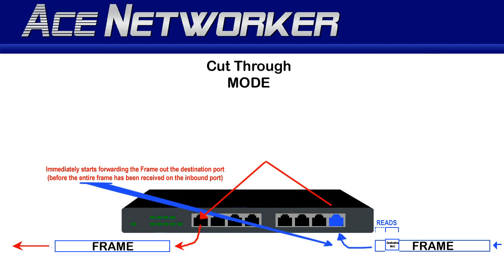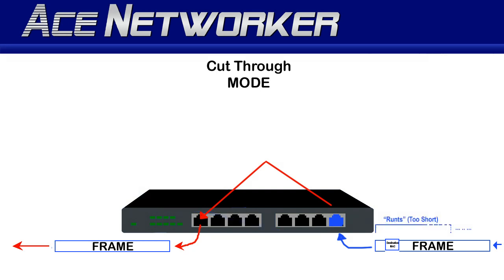Since the switch only reads the destination address, cut-through mode will also forward frames that contain errors. The FCS — frame check sequence — field in the trailer portion of the frame provides error checking. Because the switch doesn't read down to the FCS field, it forwards frames that are too short, called runts, and frames that are too long, called giants. This results in lots of retransmission requests and headaches for your network.